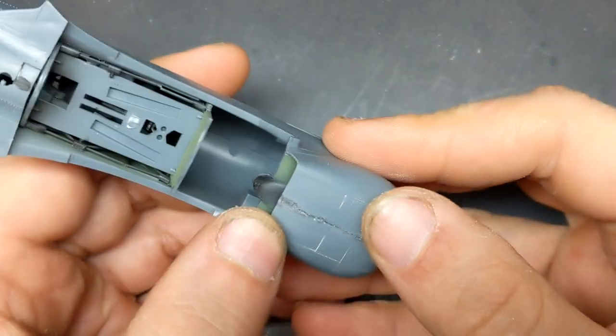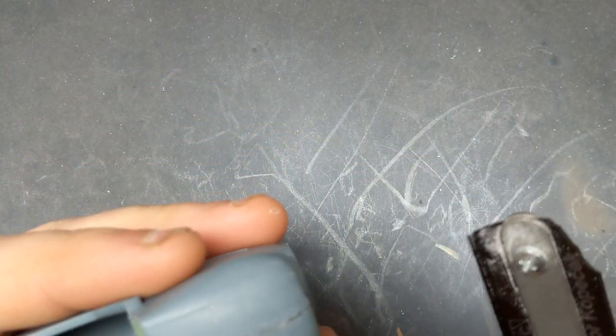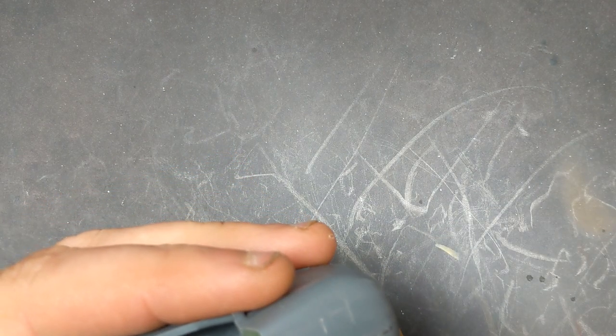Alright, now that everything has been sanded smooth, it's time to come in with the razor saw and clean up the lines and detail that were lost during the sanding.